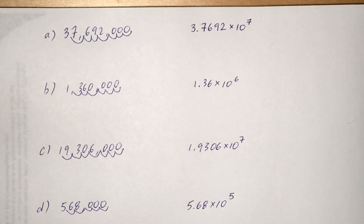And then the final population, the one of Wyoming, 568,000, is going to be converted to scientific notation as 5.68 times 10 to the 5th.